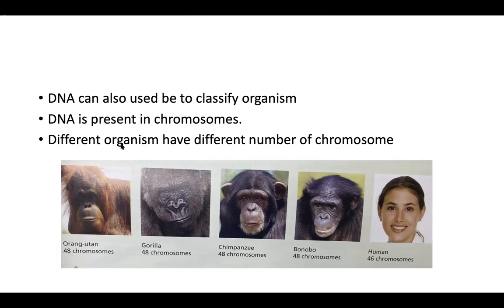Different organisms have different numbers of chromosomes. For example, humans have 46 chromosomes in the nucleus. Orangutans have 48 chromosomes. So if you want to know whether you are human or orangutan, you can check your chromosome number — if you have 46, Alhamdulillah, you are human. Gorilla, chimpanzee, and bonobo can be in the same species because they have the same number of chromosomes.